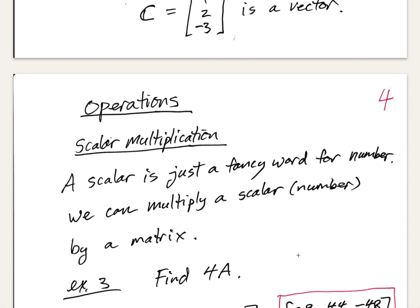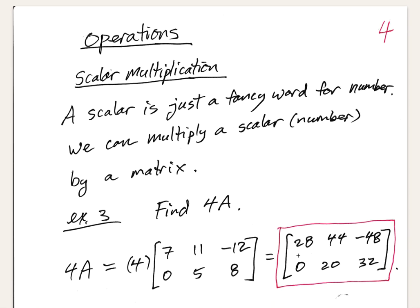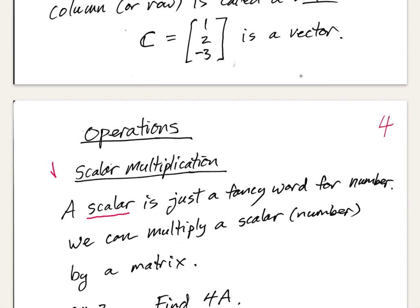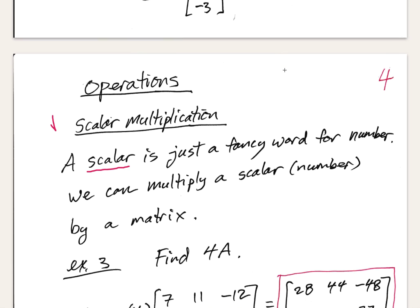Let's talk about some operations between matrices. The first operation is scalar multiplication — between a scalar and a matrix. A scalar is just a fancy word for number, coming from physics. In physics, a scalar quantity has magnitude but not direction, while a vector has both magnitude and direction.